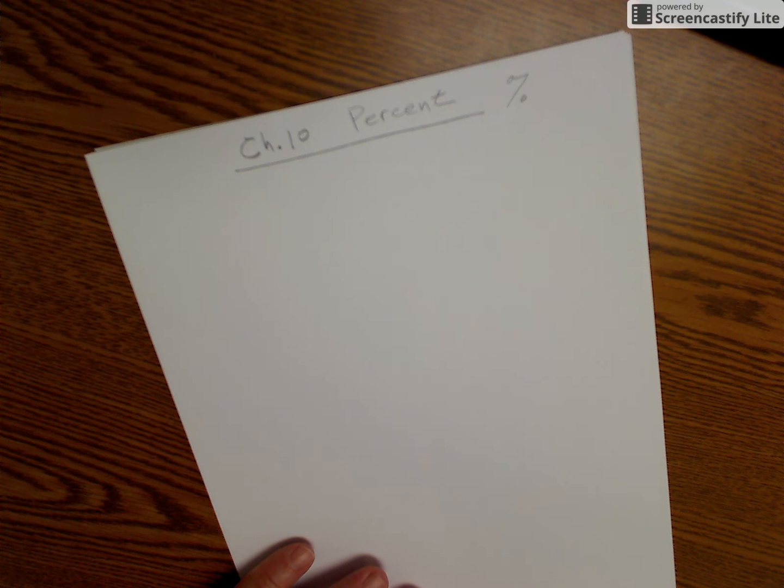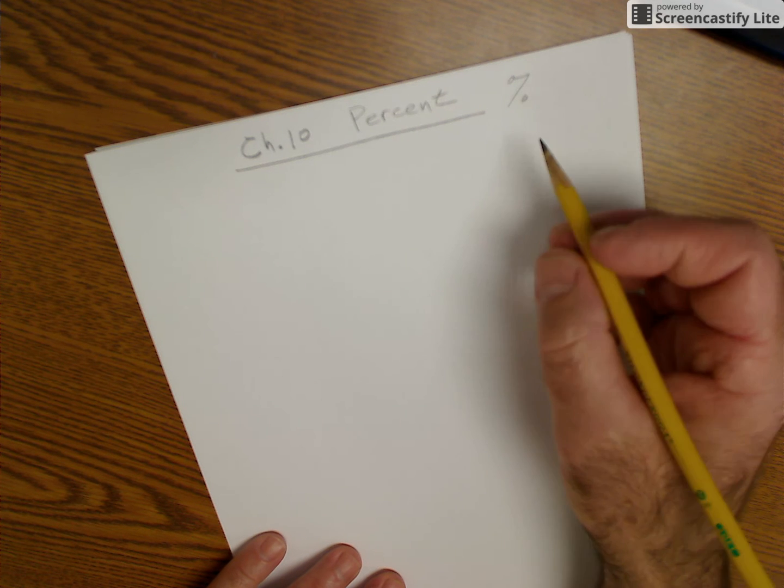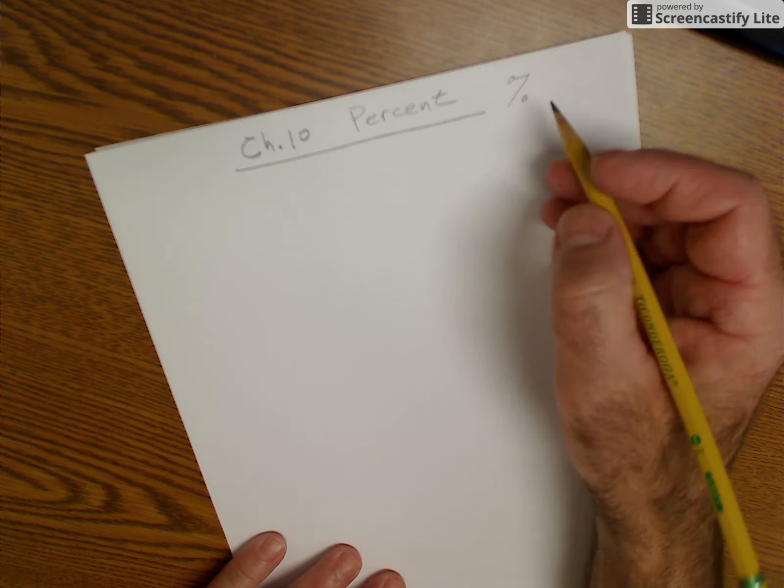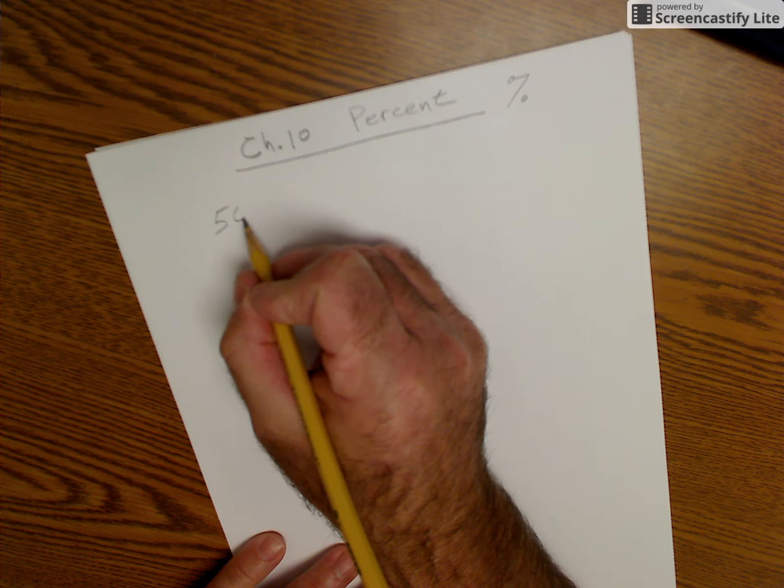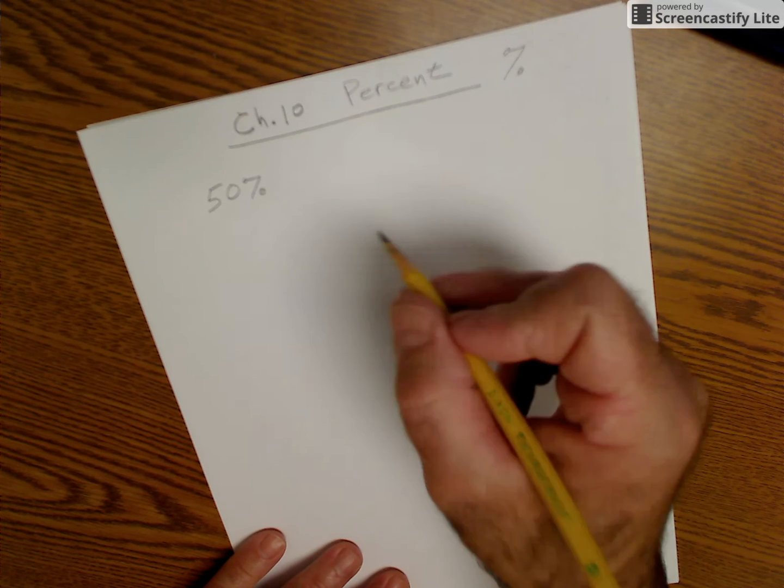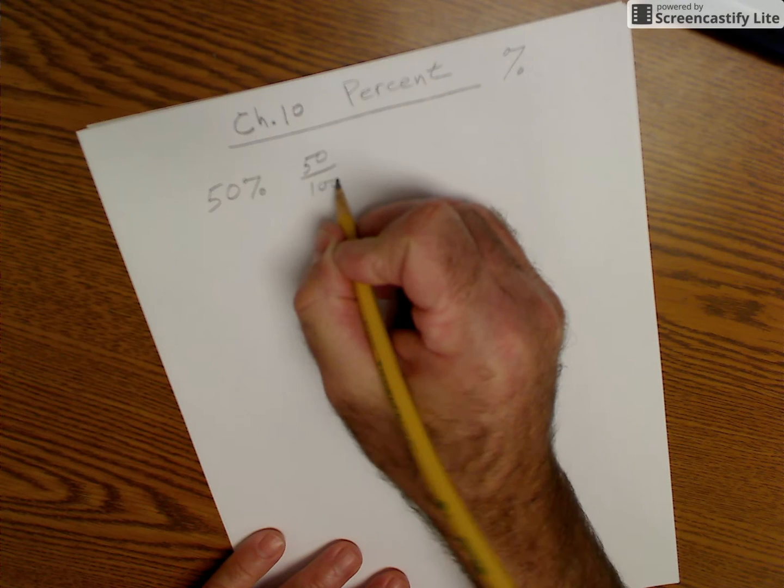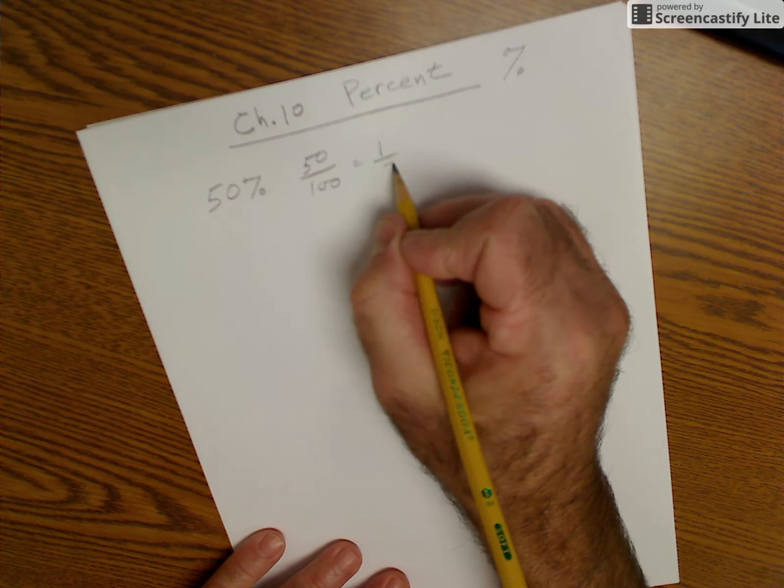and calculate the total amount when given principal rate and time. So the sign for percent is this, and a percent sign is a part of a whole. So if I have 50%, what I'm saying is that's the same as 50 of 100 parts. So it's 50 of 100 parts, which is the same fraction as 1 half.